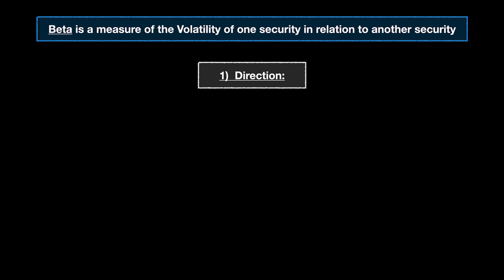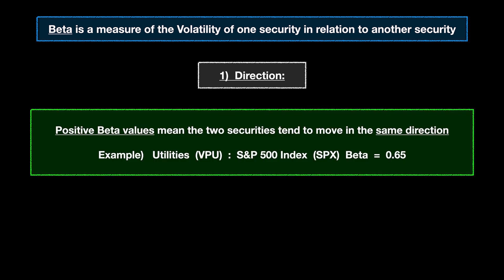Beta gives us information on two important variables. First is direction. Positive beta values mean the two securities move in the same direction. For example, over the last 15 years the utilities ETF called VPU has a beta factor to the S&P 500 of 0.65 — a positive number, meaning utilities and the S&P 500 tend to move in the same direction. When the S&P 500 goes up, VPU also tends to go up; when the S&P 500 goes down, utilities tend to go down as well. Day to day they can deviate, but longer term that's the tendency.